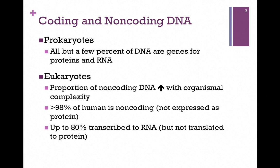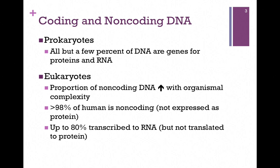In the case of eukaryotes, there's a higher proportion of non-coding DNA, and this seems to increase with the complexity of the organism. Only about two percent of our genome actually codes for protein, whereas about 80 percent is transcribed and functions at the level of the RNA, but is not translated to protein.